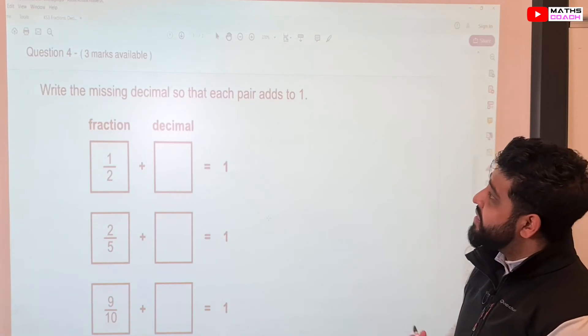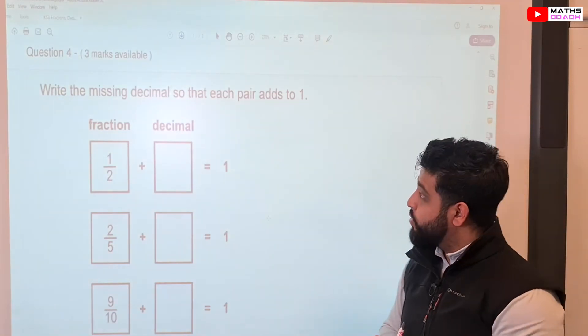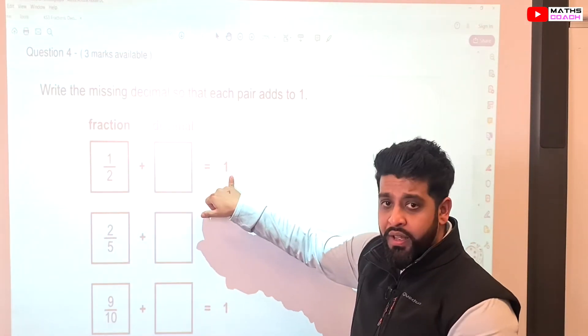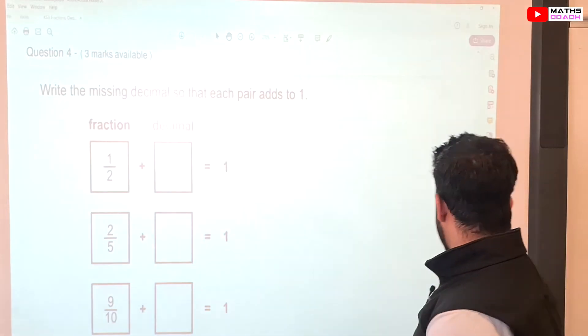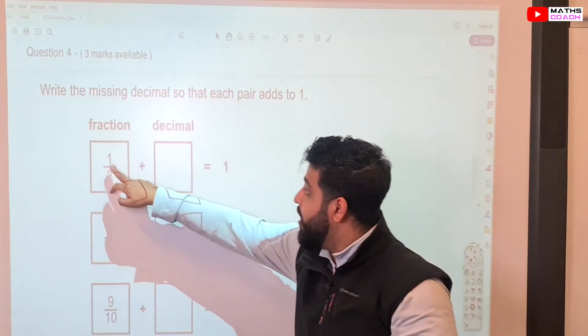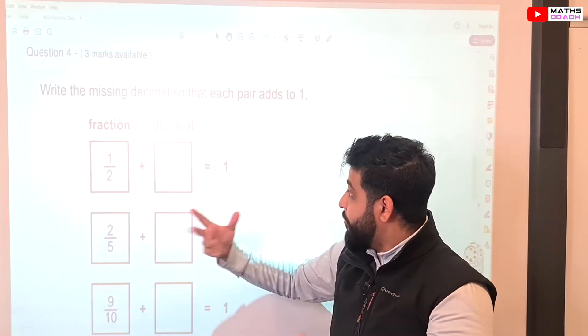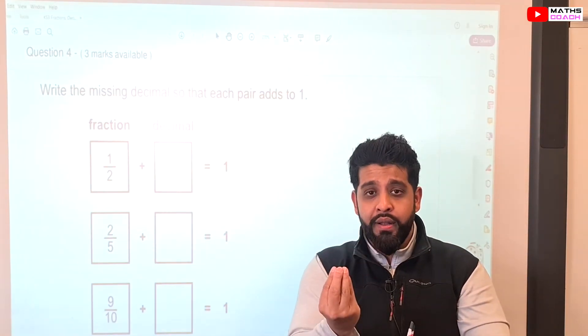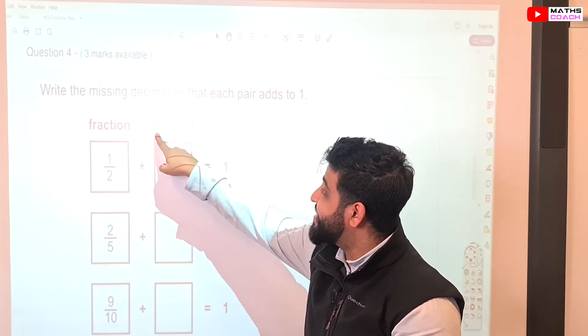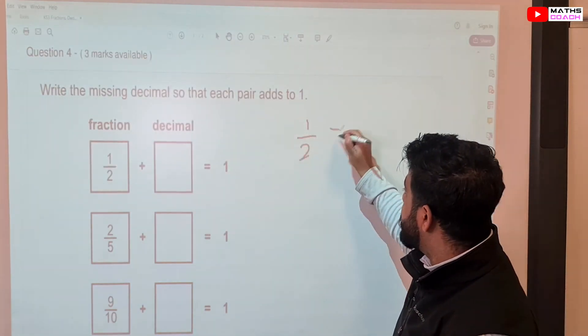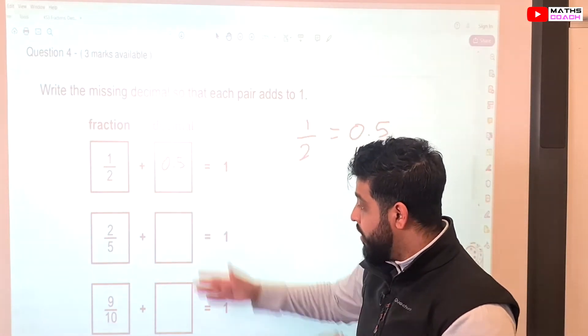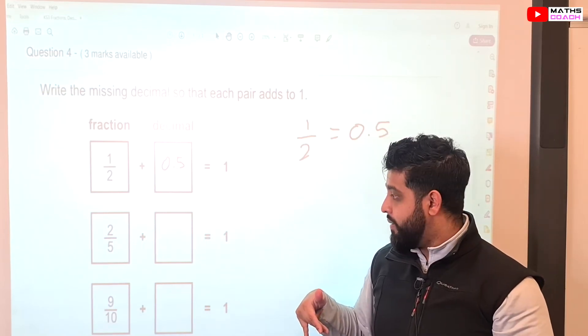Let's have a look at this next question. Write the missing decimal so that each pair adds to 1. So, we've got a fraction here of a half and we want to add something here to give us 1. Now, it tells us that it specifically wants a decimal place in here, a decimal value in here. So, first of all, let's think of the fraction that needs to go in here. A half plus what? What other fraction gives us 1? Well, we know that 1 is made up of two halves. So, therefore, a half and a half would make 1. But what is a half represented as a decimal? A half as a decimal is equal to 0.5. So, therefore, 0.5 will go here. Why don't you fill in the rest of those and then press play again when you are ready?